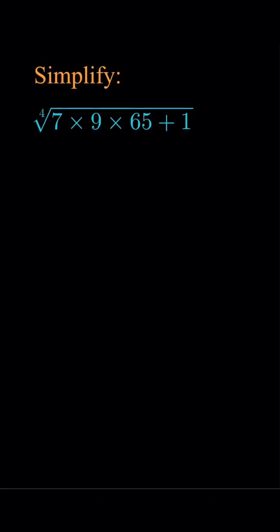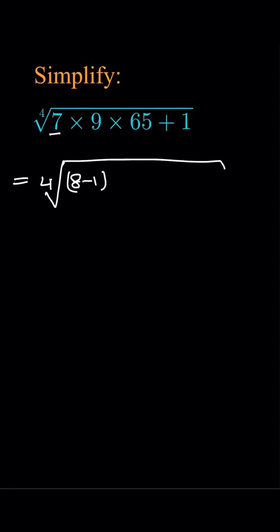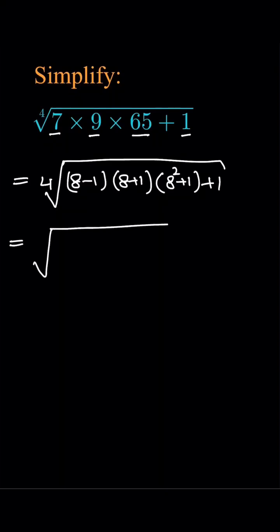Simplify the 4th root of 7 times 9 times 65 plus 1. This is equal to the 4th root of 7 as (8 minus 1), 9 as (8 plus 1), and 65 as (8 squared plus 1), plus 1.